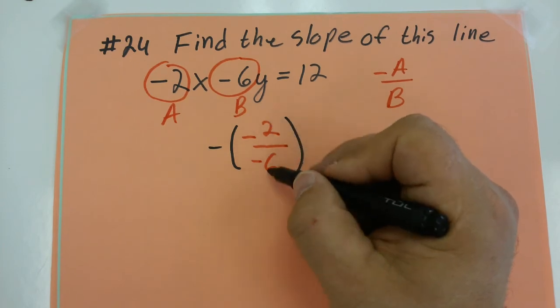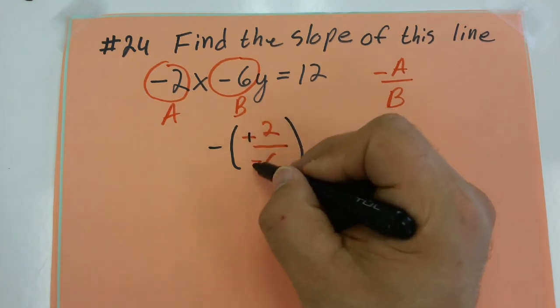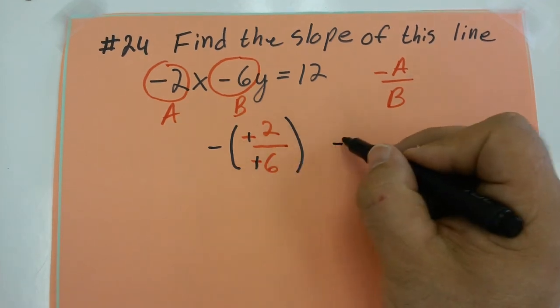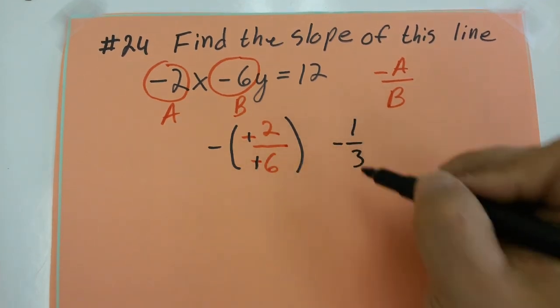So 2 over 6, negative 2 over 6, these change to positive because a negative divided by a negative is positive. So my answer should be negative 1 third.